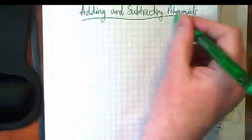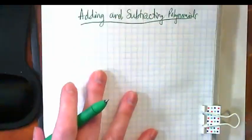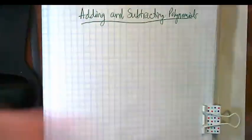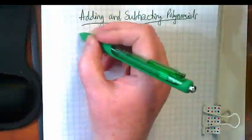The main thing that's happening when we are adding and subtracting polynomials is we are combining like terms. Typically you will see these problems looking something like this, so let's write an example for adding.